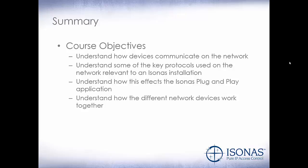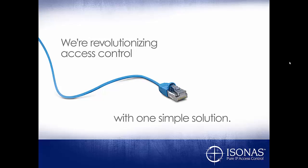In summary, we talked about how devices communicate on the network using hubs, switches, and routers. We talked about some of the key protocols used on the network relevant to an Isonus installation — IP and TCP. We talked about how this affects the Isonus plug-and-play application: it broadcasts out looking for Isonus devices; on a switch that's no problem because switches transmit broadcast traffic, but as soon as that broadcast hits a router, the router blocks it. So if you have separate networks, you'll need to pre-configure the IP addresses or run the plug-and-play on each separate network. And we talked about how network devices work together: a PC sends to a switch, the switch goes to a router, the router sends across the network to another router, back down through a switch to another PC. Thank you for attending this course — we hope it was beneficial. Have a great day.